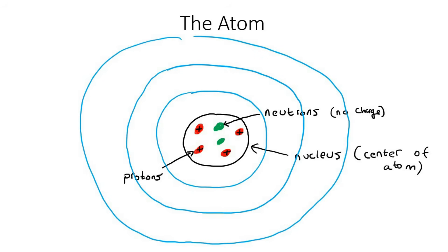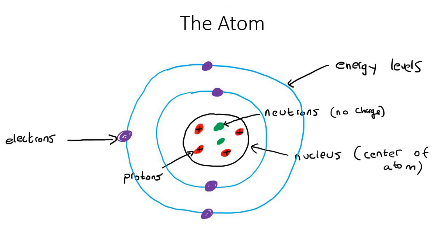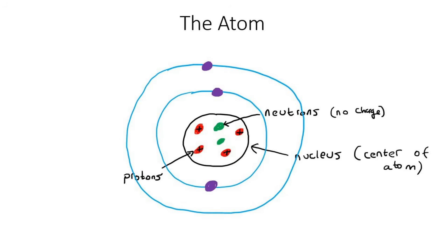Inside these rings we get electrons. So for example, here we might have an electron there, and then another one over here. I'm actually just going to do two rings. The blue rings are energy levels — we're not going to get into too much detail on that in this lesson, but it will come up soon. The purple dots are electrons.